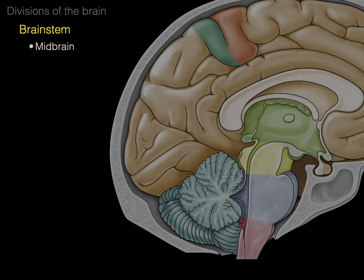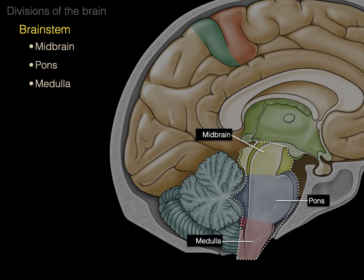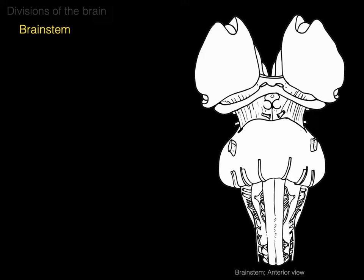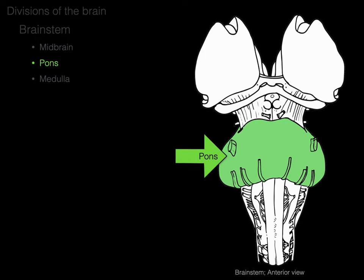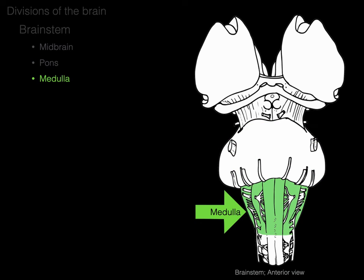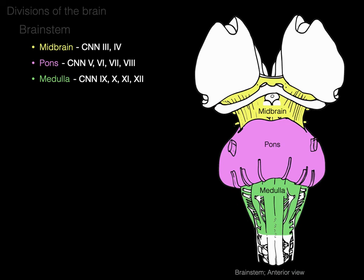The brainstem consists of the midbrain, pons, and medulla. The midbrain contains the cerebral aqueduct and gives rise to cranial nerves three and four. The pons contains part of the fourth ventricle, part of the attachment of the cerebellum, and cranial nerves five, six, seven, and eight. The pons also contains the reticular activating system and some respiratory and cardiovascular centers. The medulla oblongata houses cranial nerves nine, ten, eleven, and twelve, as well as the bottom of the fourth ventricle, the reticular activating system, and respiratory and cardiovascular centers.